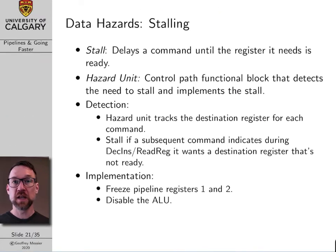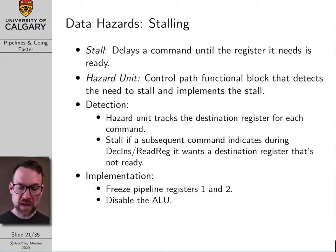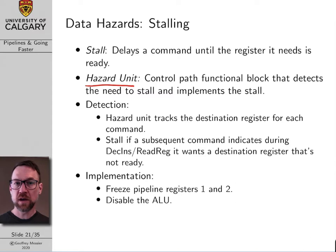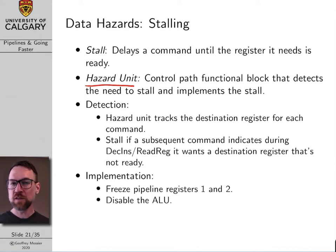The first solution is stalling — basically freezing the pipeline to give the previous instruction a chance to finish. The stalling of a pipeline is controlled by something called a hazard unit. A hazard unit is basically a functional block within the control path. I'm not going to get into the actual logic design of a pipeline control path, but this information is in your textbook, Harris and Harris, and it's worthwhile taking a look at it.